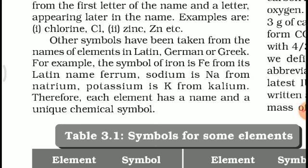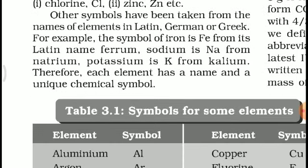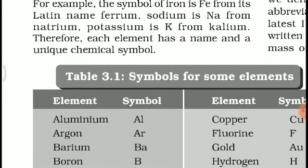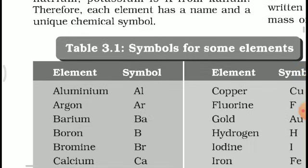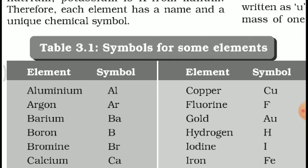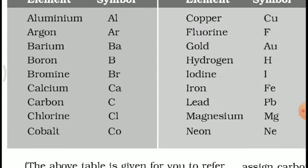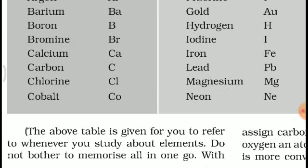Other symbols are taken from the names of elements in Latin, German, or Greek. For example, the symbol of iron is Fe, from its Latin name ferrum; sodium is Na, from natrium; potassium is K. Each element has a name and a unique chemical symbol, as shown in Table 3.1. These symbols are important to remember, especially if you opt for science in higher classes.